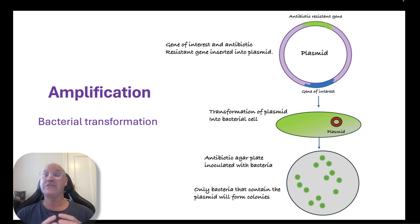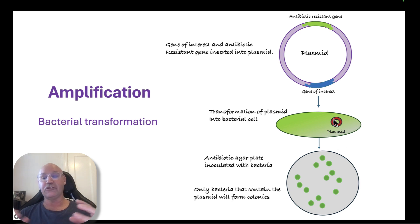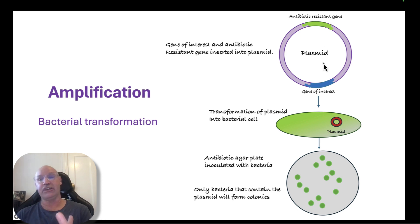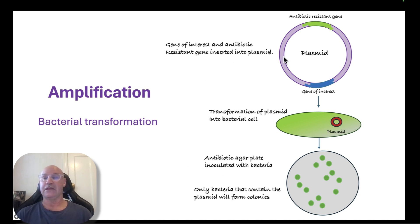After that, we need to amplify it — we need to make more of the gene. We've inserted the gene of interest as well as an antibiotic-resistant gene into the plasmid, and then we insert the plasmid into the bacterial cell. We culture the bacterial cells on an agar plate impregnated with an antibiotic. Only the bacteria that have the antibiotic-resistant gene and our gene of interest are going to grow. All of the bacterial colonies that grow will be the ones with the gene of interest. This process is called bacterial transformation.